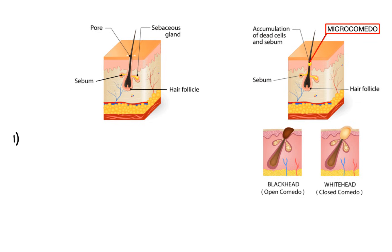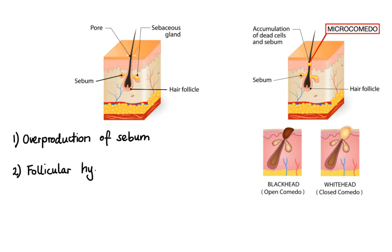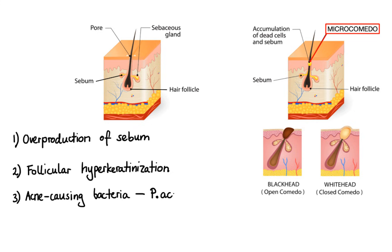The first one is overproduction of sebum. The second one is follicular hyperkeratinization. And the third one is presence of acne-causing bacteria that includes various strains of Propionibacterium acnes, abbreviated as P-acnes. Let's discuss these a bit more.